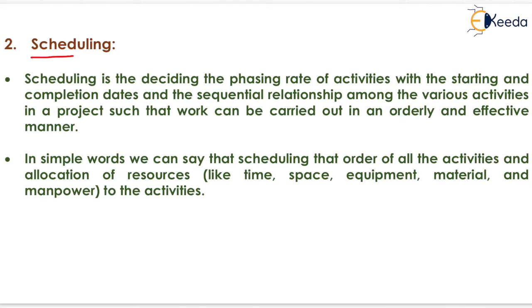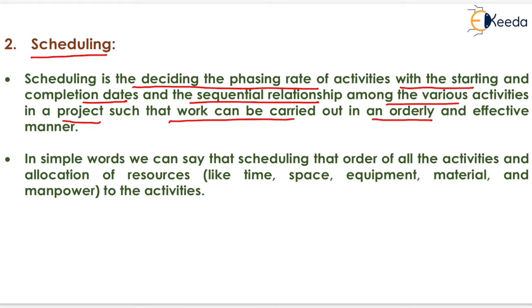The next stage is scheduling. Scheduling is deciding the pacing rate of activity with the starting and completion date, and the sequential relationship among the various activities in a project, such that work can be carried out in an orderly and effective manner. We have to perform all the activities within a sequential order so that the project will be completed within a fixed time interval.